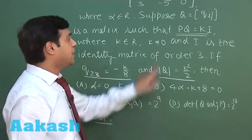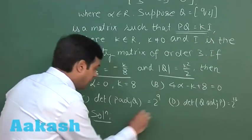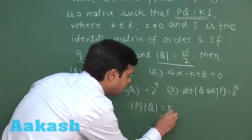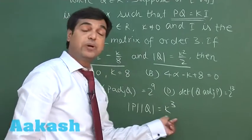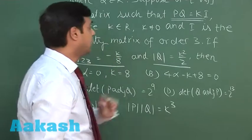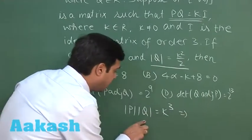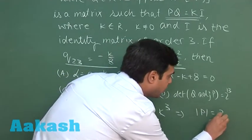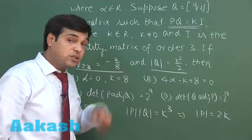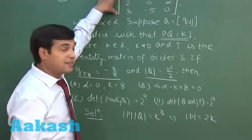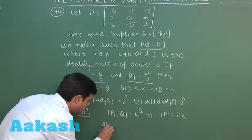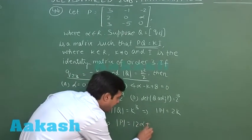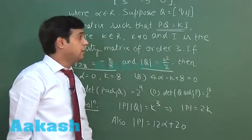Since PQ equals kI, taking the determinant we can write: det(P) · det(Q) = k³. Since det(Q) = k²/2, substituting this gives det(P) = 2k. We can also find det(P) using the matrix P directly, from which we get det(P) = 12α + 20.